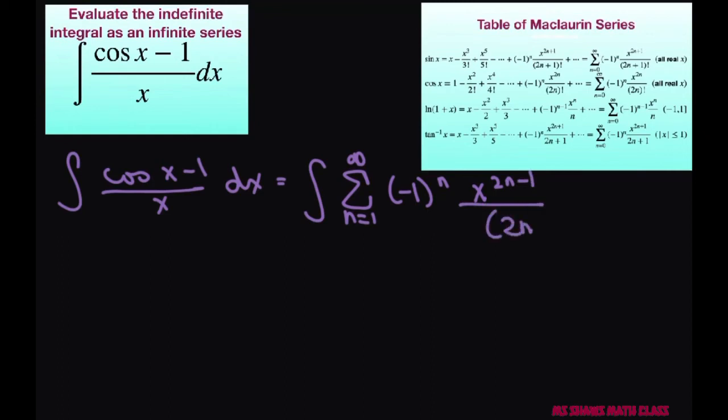We're going to do the integral of cosine of x minus 1 divided by x dx which is the same as the integral of the sum from n equals 1 to infinity negative 1 to the power of n times x to the power of 2n minus 1 divided by 2n factorial.